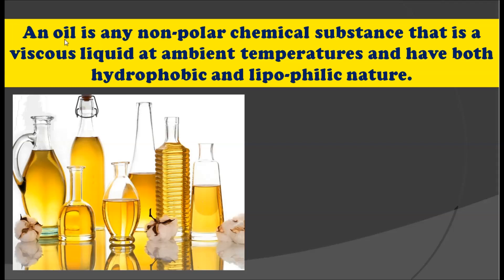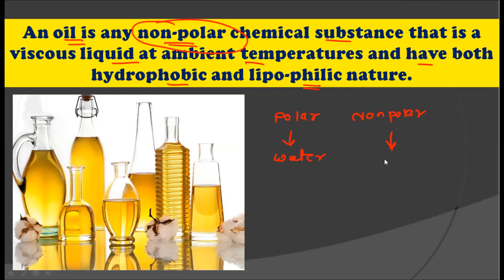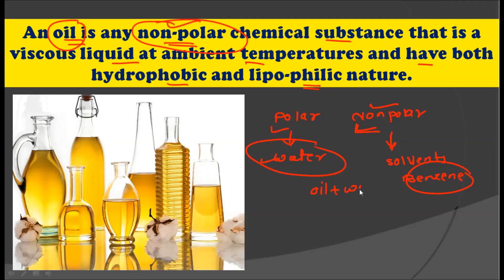So first of all, what is oil? An oil is any non-polar chemical substance that is viscous liquid at ambient temperature and has both hydrophobic and lipophilic nature. Oil is considered to be non-polar. In biology, polar means which is soluble in water, while non-polar means which is soluble in organic solvents like benzene. So polar compounds tend to be water-loving, while non-polar compounds tend to be water-hating. That is why oil's nature is called a non-polar chemical substance.